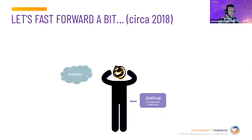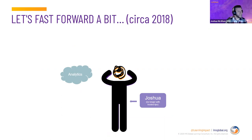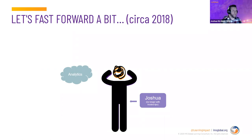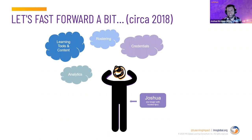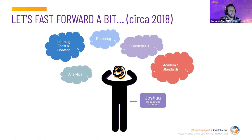They brought me on really to talk about Caliper. Caliper is the IMS specification that describes how you send events about learning activities — somebody read a book, somebody clicked on a page, etc. I was thrown into a bunch of terminology and acronyms I had no knowledge of, and it was a little overwhelming. Then, as I showed any proclivity for success, they started adding on — analytics, rostering, tools and content stuff, and now credentials and academic standards are all the rage. You can see where I'm going: there is a lot of breadth to what the IMS suite of standards and specifications covers.